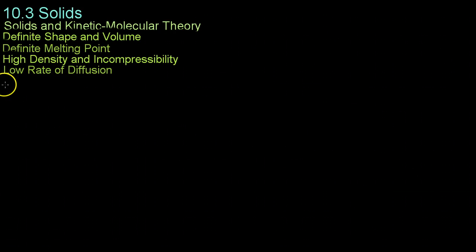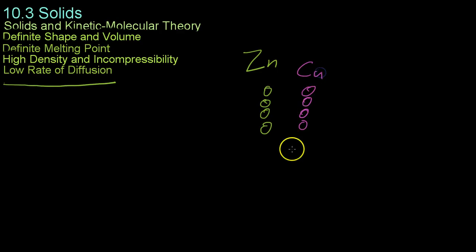The last property we're going to be discussing is the low rate of diffusion among solids. And this one's kind of a no-brainer if you really think about it, because if you take two solids and push them together, let's say this is zinc and over here we have copper, and now if we push them together, what you'll find is that very few, if any, atoms will diffuse from one side over to the other.